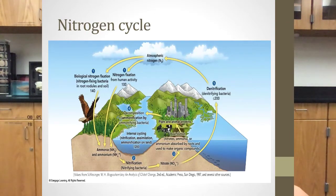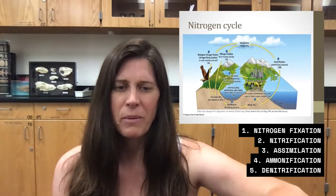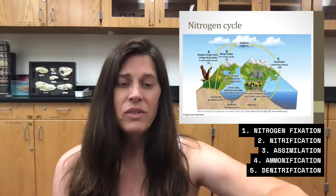The fifth step is denitrification. So that's the reduction of the nitrate back to the gaseous nitrogen, back into the atmosphere there, the N2. So denitrifying prokaryotes are able to reverse the action of the nitrogen fixing and the nitrifying organisms by returning the nitrogen back into the atmosphere. So there are the five steps.